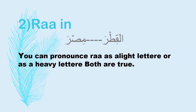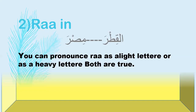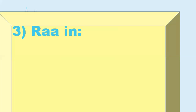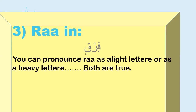Third exception: Ra in 'Far' — when we stop on this word, Ra has Sukun preceded by Kasra, so it is normally light. But this is an exception — you can pronounce Ra as either light or heavy; both are correct. 'Far' or 'Far'.